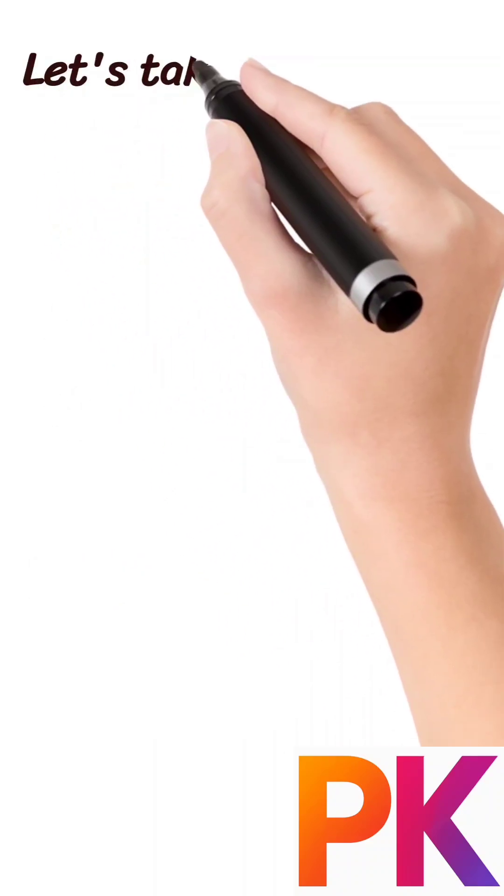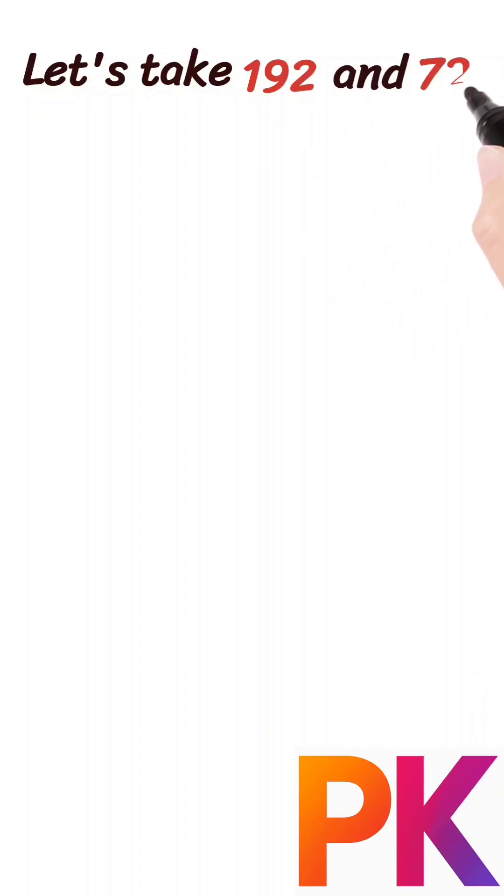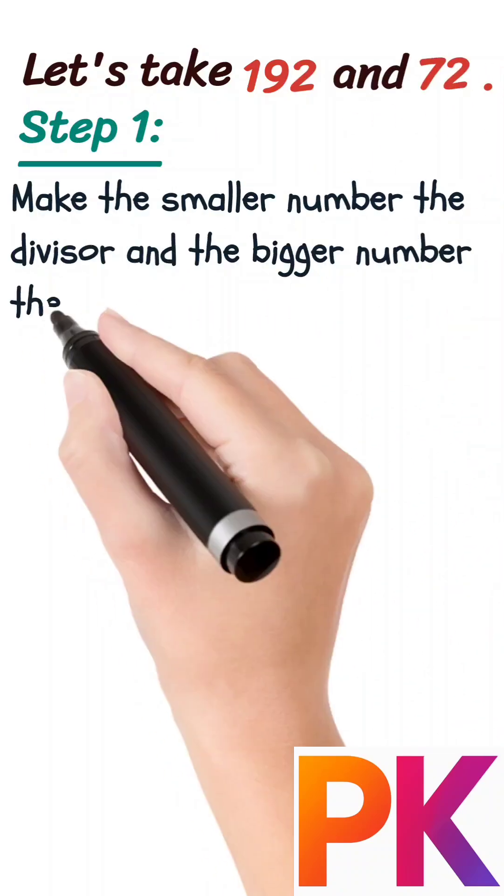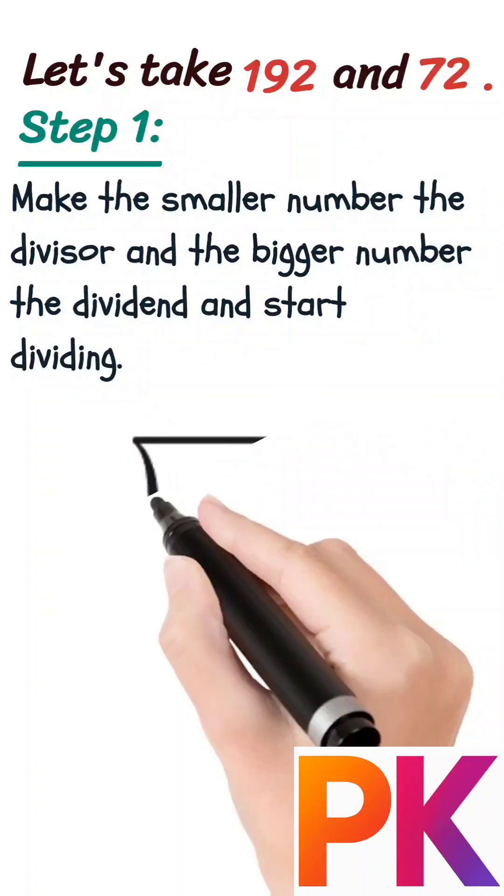Let's take two numbers, 192 and 72. Step 1: Make the smaller number the divisor and the bigger number the dividend.